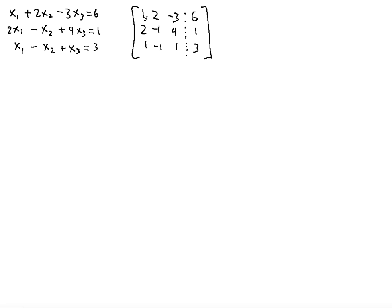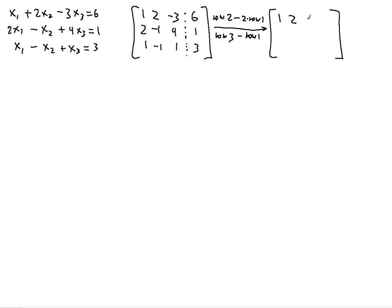You have to have leading ones, just like in Gaussian elimination. There are certain steps that are exactly the same. First, you make the leading one so that this column starts with 1 and everything else is zero. We need to transform the second and third rows so that instead of 2 and 1, there are zeros. We say row 2 minus 2 times row 1, and row 3 minus row 1. Copying the first row — it stays the same.